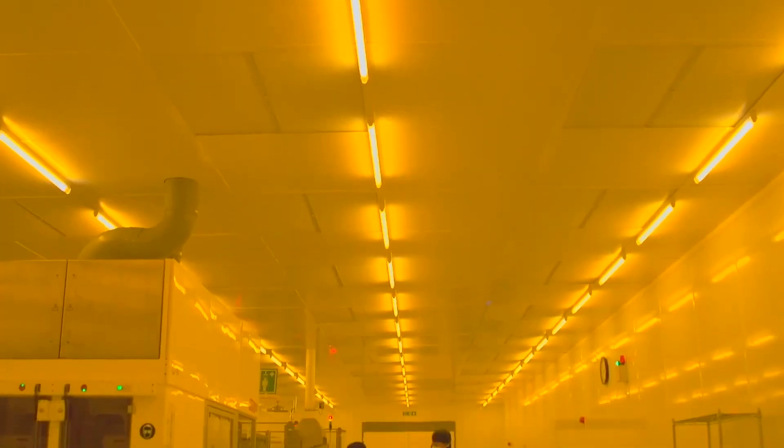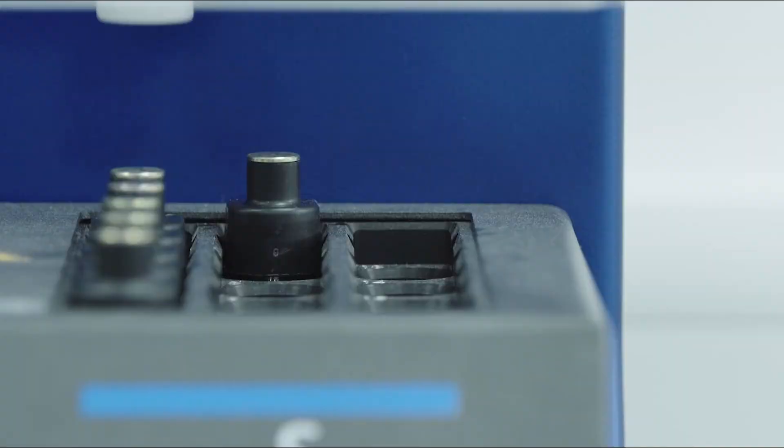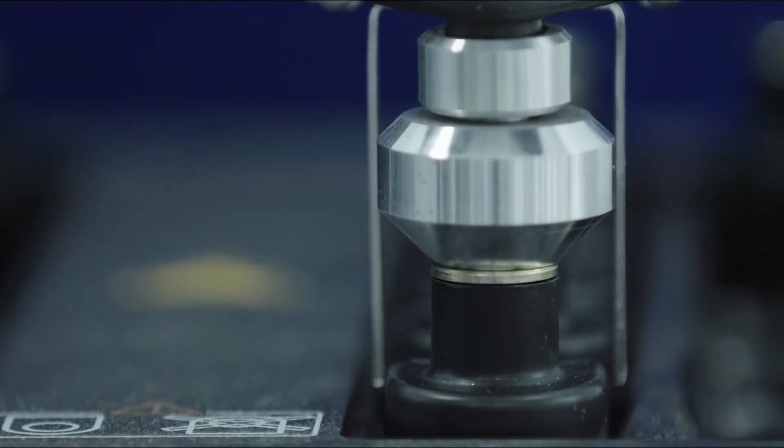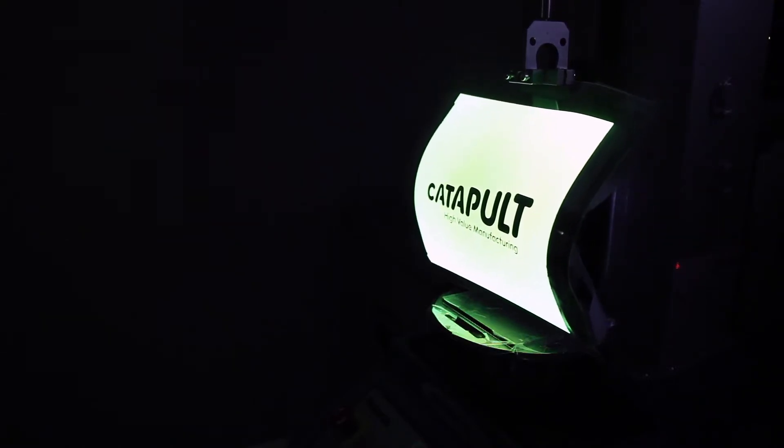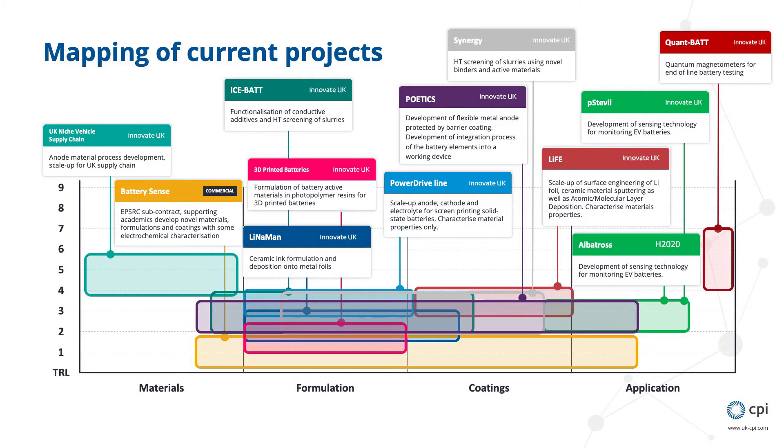CPI's battery project portfolio covers a broad range of activities, such as materials production scale-up, formulation of novel materials and coatings, as well as application testing and sensors integration. Discover just some of our extensive track record of collaborating with organisations to drive forward their batteries technology.